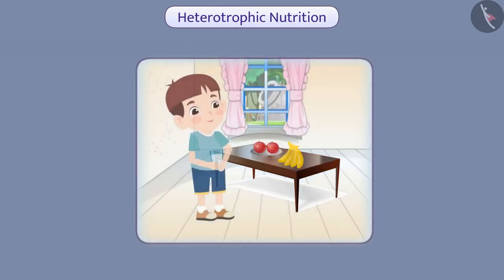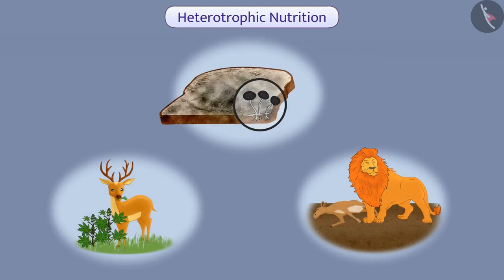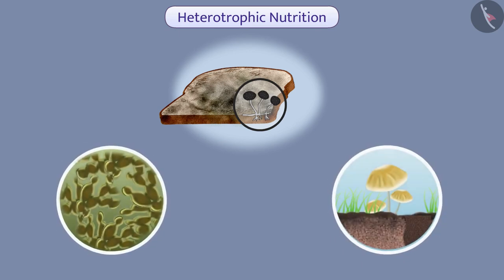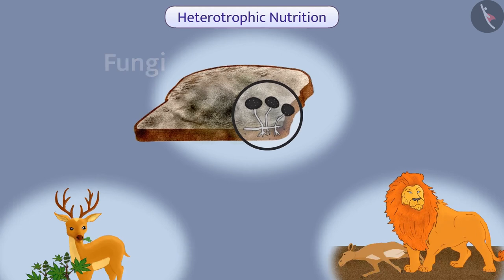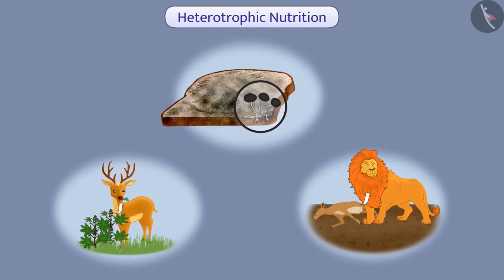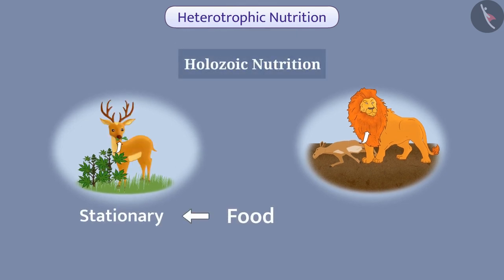Now let us understand heterotrophic nutrition in detail. Heterotrophic organisms depend on the food made by autotrophic organisms. Depending on the type of food, availability of food material, and method of food intake, different heterotrophic organisms may have different forms of nutrition. For example, some heterotrophic organisms such as yeast, mushroom, and fungi break down food material outside their body and then absorb it, while other organisms ingest food that is digested inside the body. In herbivores, the food is stationary, while in carnivores, the food is mobile.